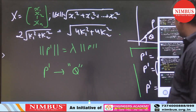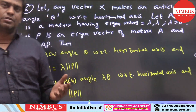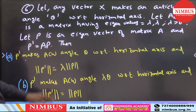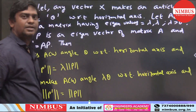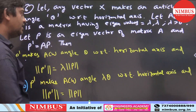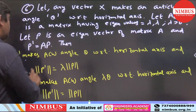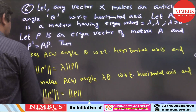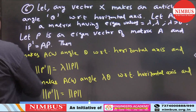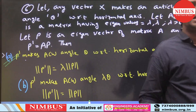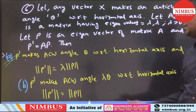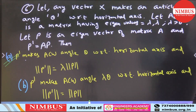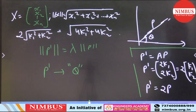So option A states: P' makes anticlockwise angle theta with respect to the horizontal axis — yes, that is correct. And the magnitude of P' = λ × magnitude of P. The angle remains theta but the magnitude is scaled by λ. Option A is correct.